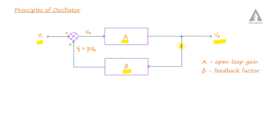A fraction of the output is fed back as input. That fraction is beta, and that fraction is the feedback voltage Vf. So Vf is equal to beta times V0 — for example, 0.1·V0 or 0.2·V0.